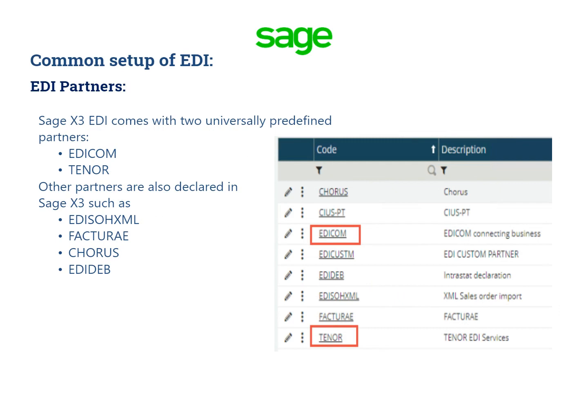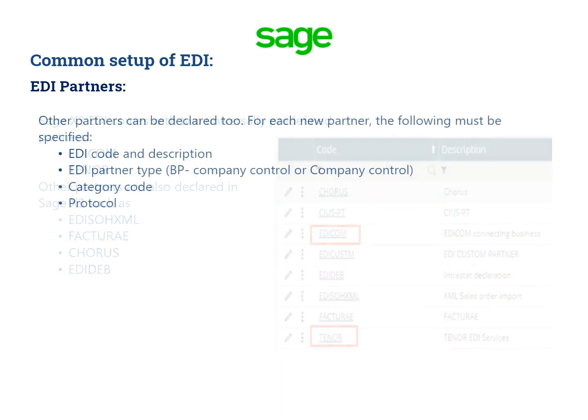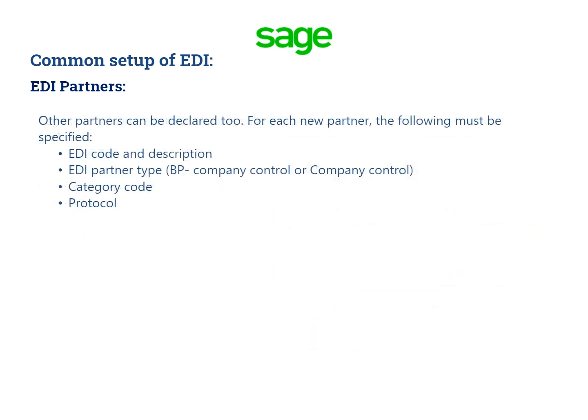SAGE X3 EDI comes with two universally predefined partners: EDI com and Tenor. Other partners are also declared in SAGE X3 such as EDI SOH XML, FACTORY, CORUS, and EDI DEB. Other partners can be declared too. For each new partner, the following must be specified: EDI code and description, EDI partner type whether it is a BP company control or a company control, a category code, and a protocol.